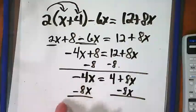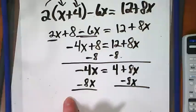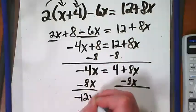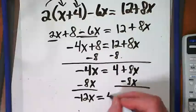Negative 4, negative 8. Looks like I'm not avoiding negatives here anyway, huh? Negative 4, negative 8 are negative 12x. Equals 4.